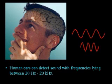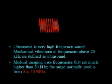To start with — what is ultrasound? Ultrasound is a sound wave, but its frequency is higher than the routine sound waves which we hear. The human ear can detect sound with frequencies lying between 20 to 20 kilohertz. Ultrasound is a very high frequency wave that uses mechanical vibrations at a frequency higher than 20 kilohertz. For routine ultrasound in radiology, we normally use waves in a frequency range of 3 to 15 megahertz.